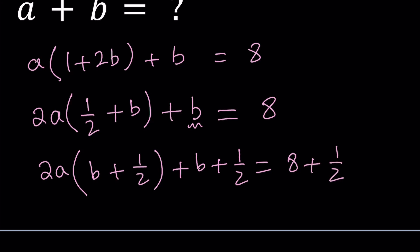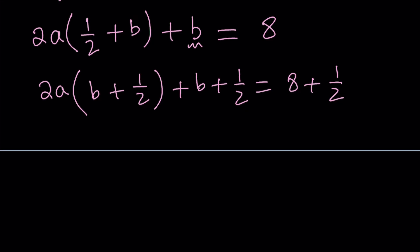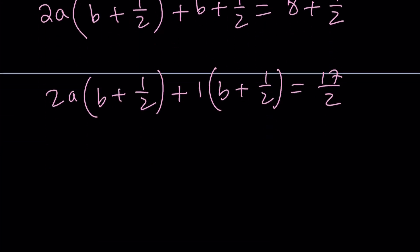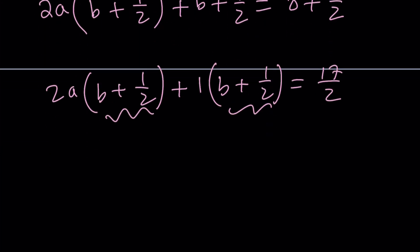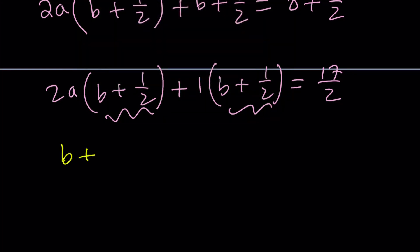By the way, there is an alternative approach. If you don't want to go through this, I'll briefly talk about it. Now we have b plus 1 half. And obviously, to find a common factor, we can go ahead and write this as 1 times b plus 1 half. That is equal to 8 plus 1 half, which can be written as 17 halves. Now we know that b plus 1 half is a common factor, right? So we can take it out. b plus 1 half multiply by 2a plus 1. That's how you write the second factor.